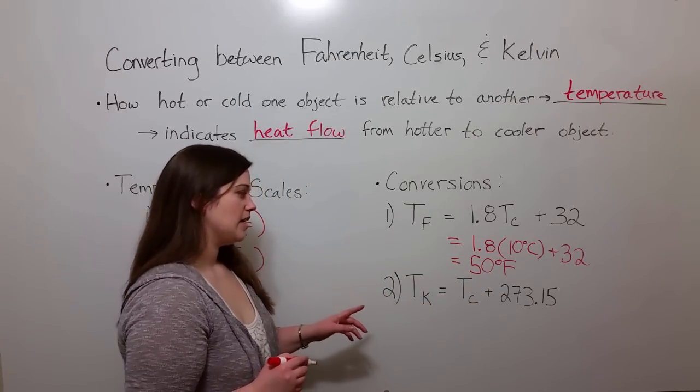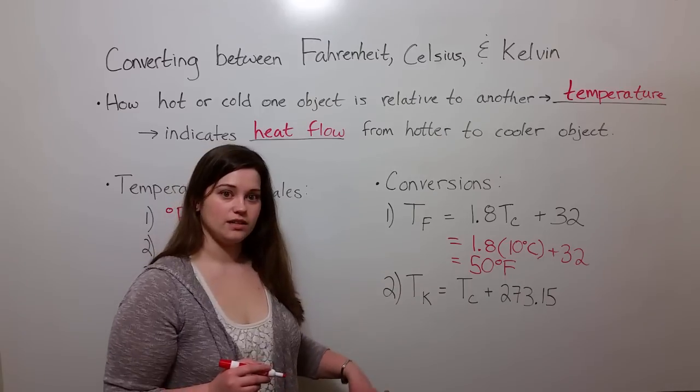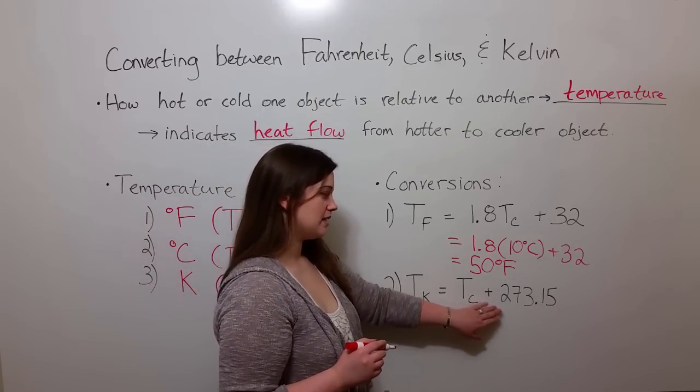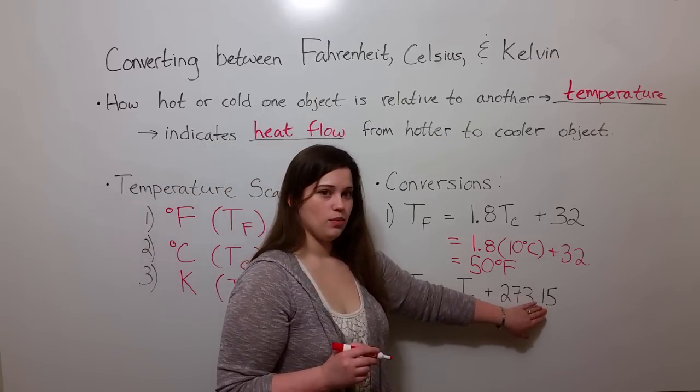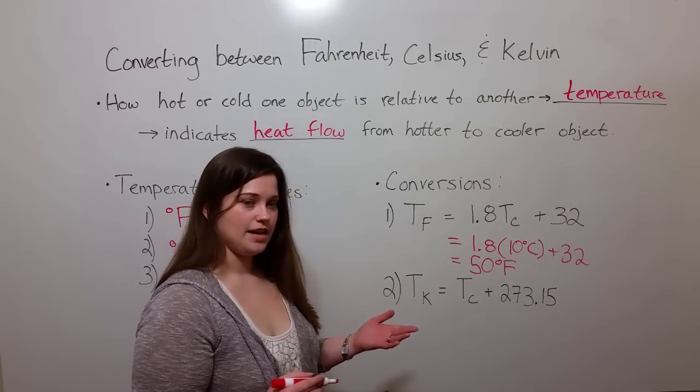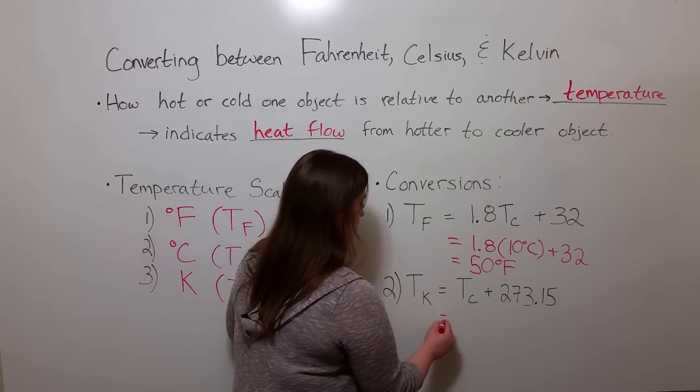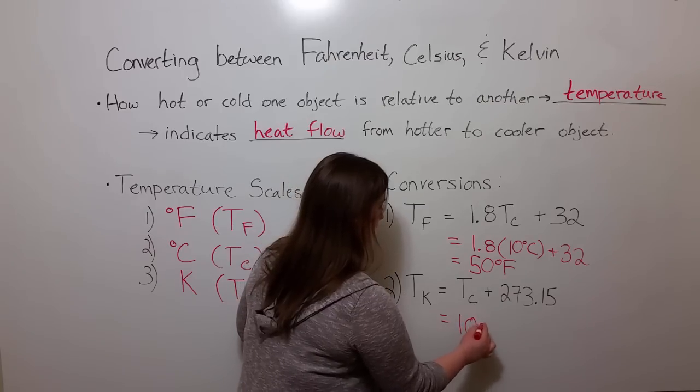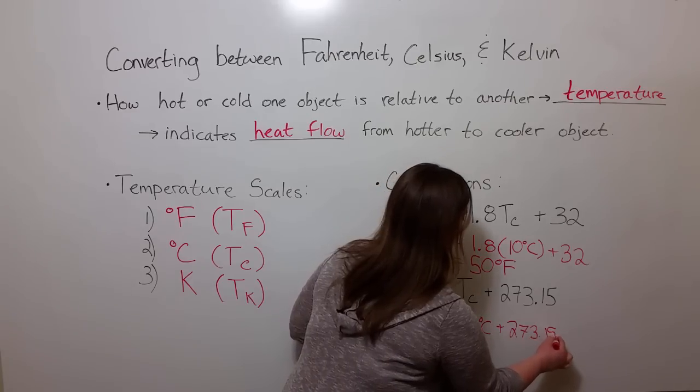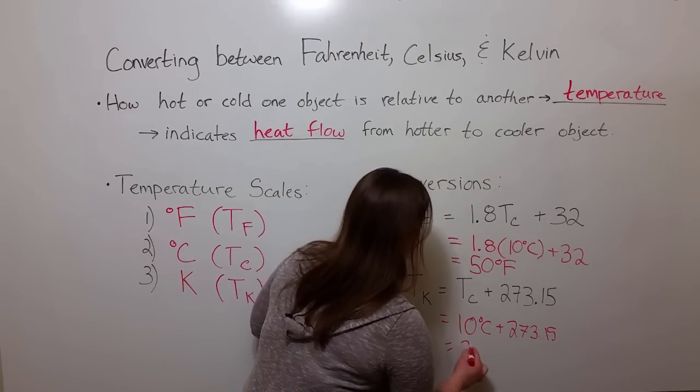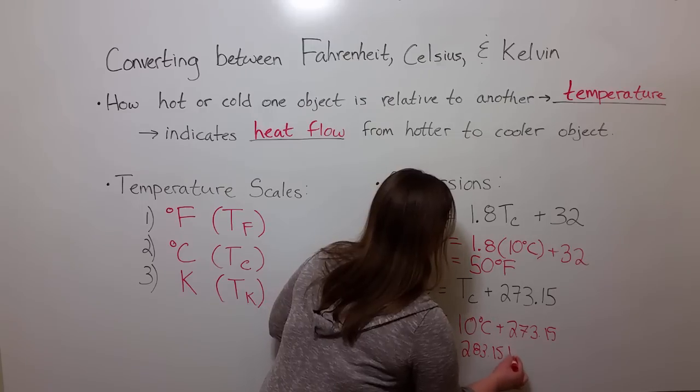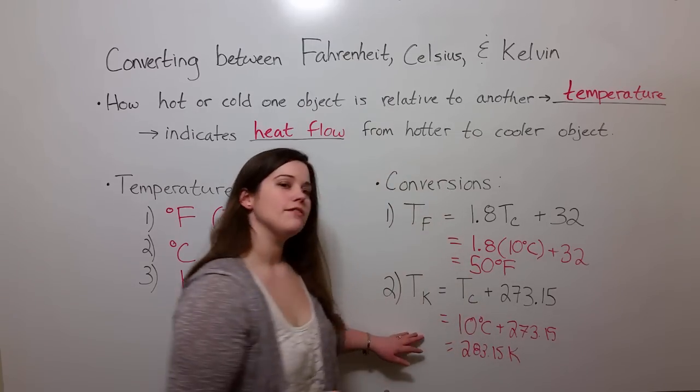The calculation to get from Celsius to Kelvin is a little easier. It's just the temperature in Celsius plus 273.15. So, for example, if we start with that 10 degrees Celsius again, the temperature in Kelvin is the 10 degrees Celsius plus 273.15, which equals 283.15 Kelvin.